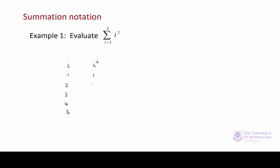So 1 squared is 1, 2 squared is 4, 3 squared is 9, and so on. And then we sum those up.